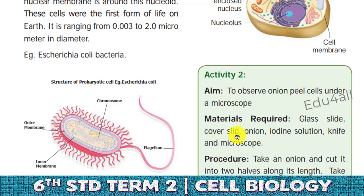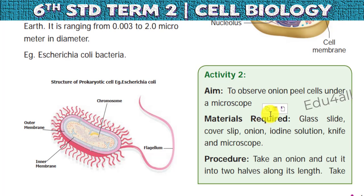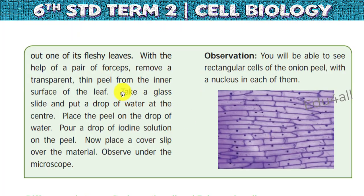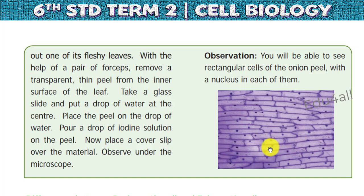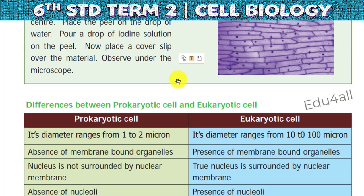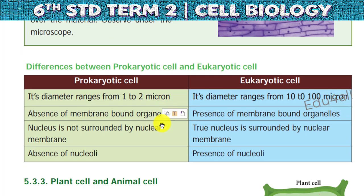Next we are going to observe the onion skin. We can peel the onion skin and with the help of a slide we can easily identify the structure under a microscope. We need some iodine solution — the peel is stained with iodine solution, then placed under the microscope. Now you can see the different layers of cells. Each and every layer is a cell, and the dense dot you can see is called the nucleus. So it is a typical eukaryotic cell.